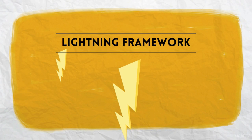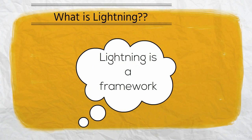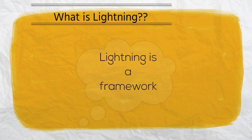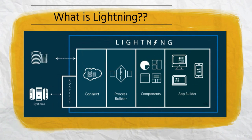Lightning is a framework which is based off of a component model which helps to build apps faster. In layman terms, Lightning framework basically puts together different components which result in faster app development because you are reusing the existing components.